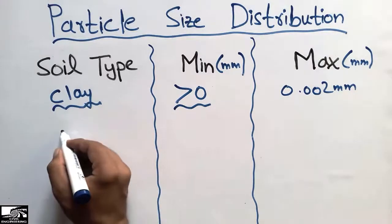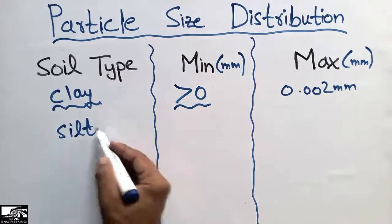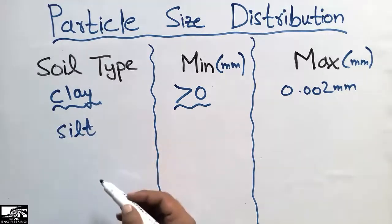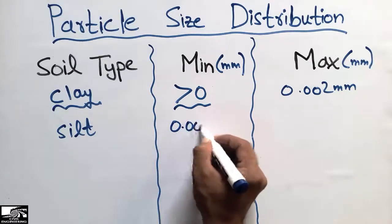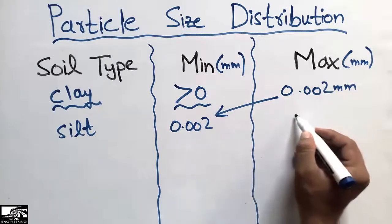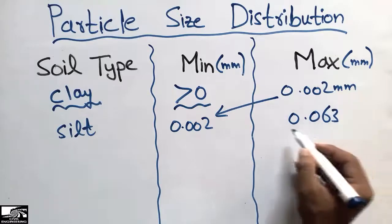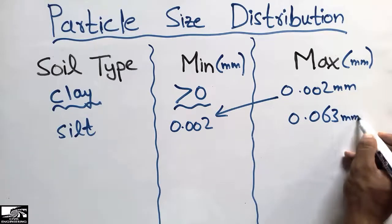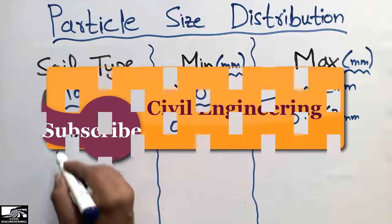The second soil type is silt. The particle size of silt is greater than clay. Its minimum size ranges from 0.002, which is the maximum size of clay, and its maximum size ranges up to 0.063 millimeters.